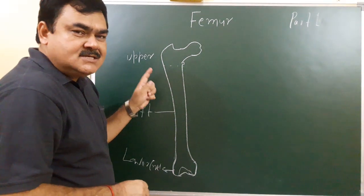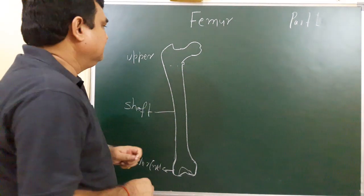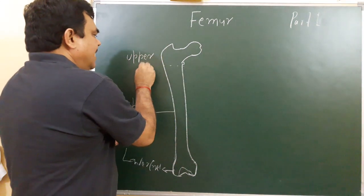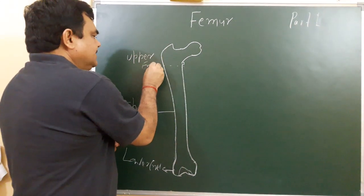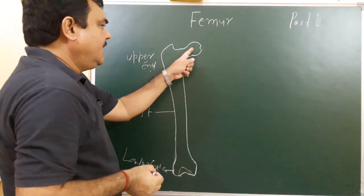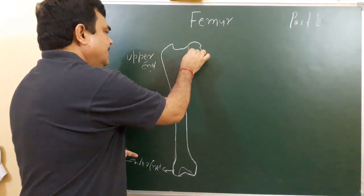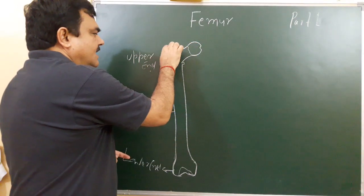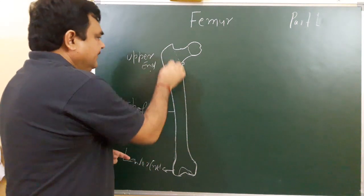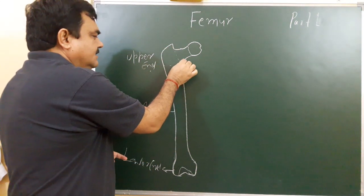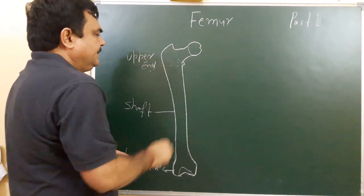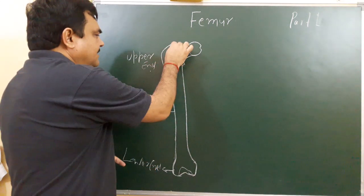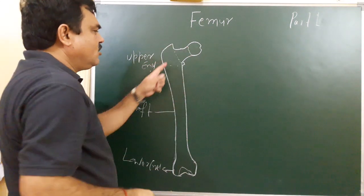The upper end has a head, a neck, a greater trochanter, and a lesser trochanter. There is also an intertrochanteric line on the upper end.